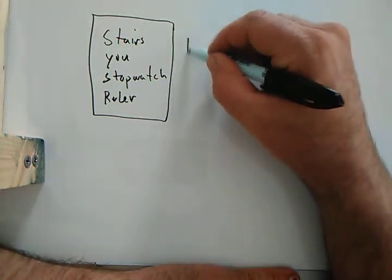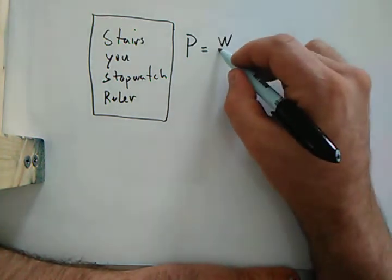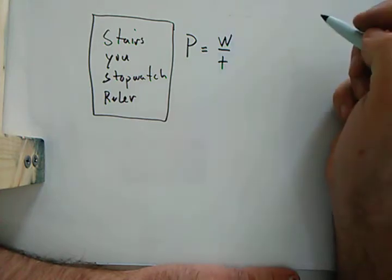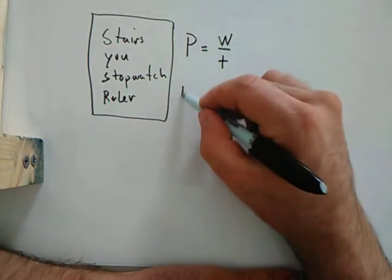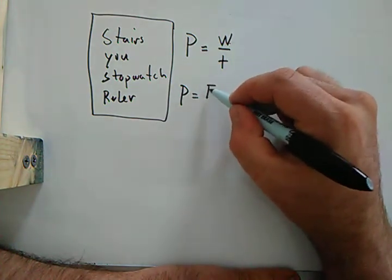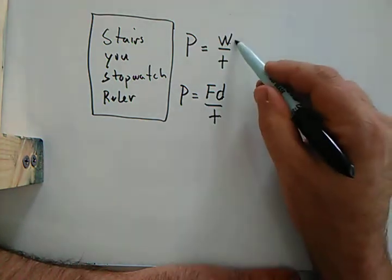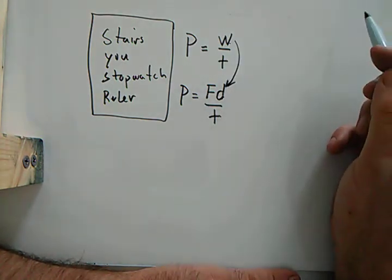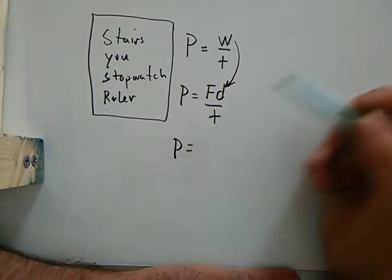Okay, we said power is work over time. And bear with me here, I'm going to change a few things. Power: work is force times distance, force times distance over time. You see what I'm doing? I just changed work to force times distance.